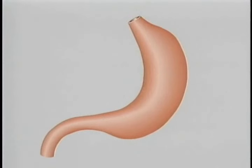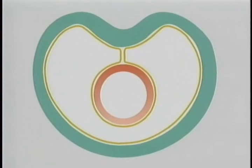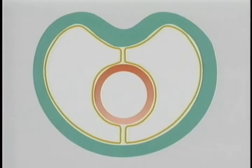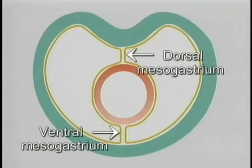The foregut is different from the rest of the GI tract. The hindgut and midgut are attached to the body wall by a double fold of peritoneum only along the back. The foregut is attached also at the front. Its two attachments are the dorsal mesogastrium, behind, and the ventral mesogastrium, in front.